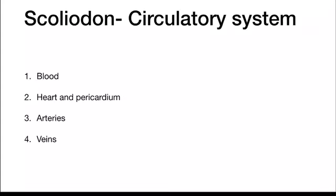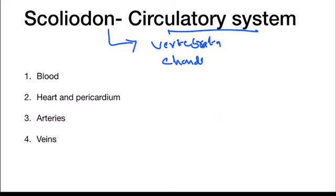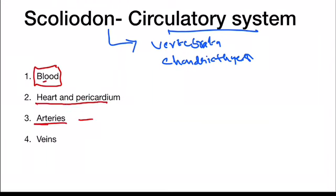In this video we are going to learn the circulatory system of Scoliodon. Scoliodon belongs to subphylum Vertebrata and the class Chondrichthyes. In this circulatory system we are going to learn about the blood, then heart and pericardium of Scoliodon, then arteries — that means the arterial system — then veins, that means the venous system.